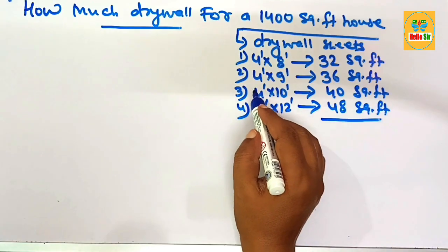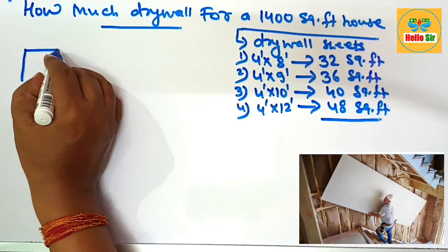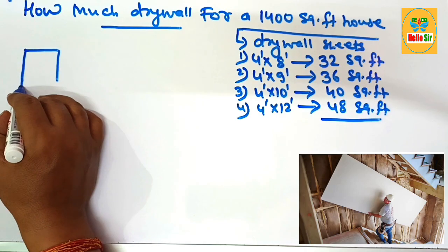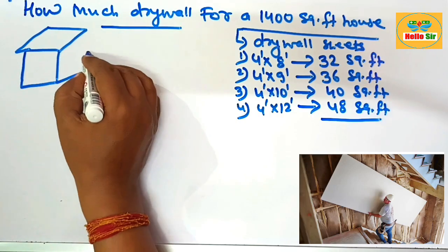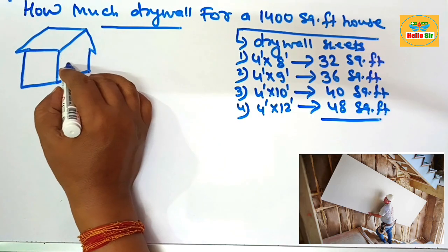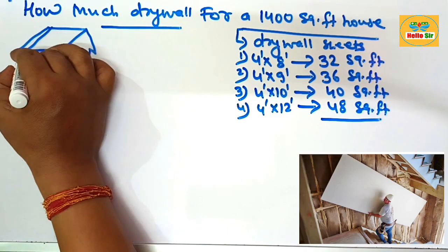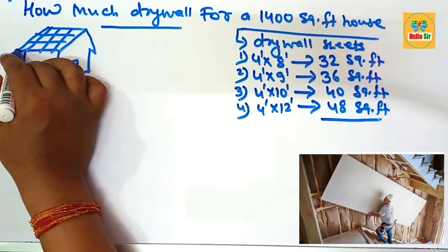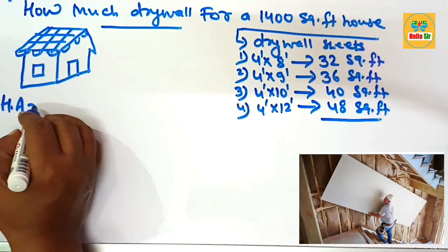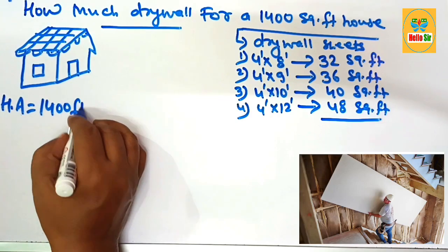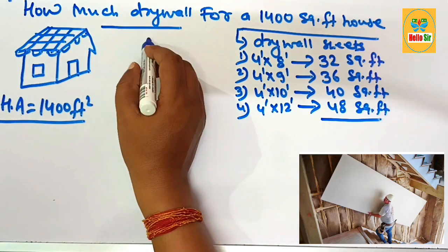Here we make a rough diagram for the house that has an area of about 1400 square feet. This is a rough diagram to understand the house. This is the door, this one is the window, this one is the roof covered with single material, and this one is the nogging. Suppose this house area is about 1400 square feet.